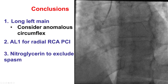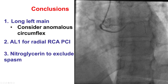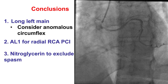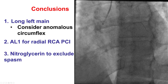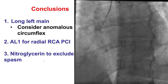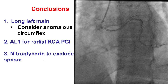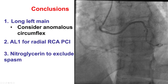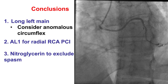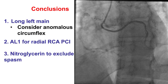In summary, there are two key concepts for coronary angiography. One is that all myocardial territories should have their coronary flow identified, and in cases where there is a long left main, anomalous circumflex is often the answer. The second is nitroglycerin — it should be given in every angiogram if possible, unless the patient has very severe hypotension, to exclude any spasm that can be misinterpreted as a fixed coronary lesion. Finally, using an Amplatz catheter can facilitate right coronary artery PCI using radial access as it provides strong support. Thank you.